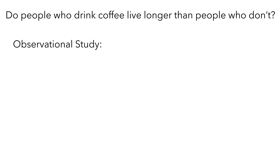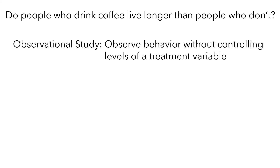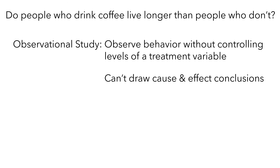We used an observational study to answer the first research question, which was, do people who drink coffee live longer than people who don't? In observational studies, we collect data by observing behavior without controlling the levels of a treatment variable. In our example, some participants chose to be coffee drinkers and others chose not to drink coffee, and then we observed and compared how long the two groups of people lived. By doing this, we avoided ethical issues and the need to collect data in a lab. But a significant issue was that we couldn't draw cause-and-effect conclusions. So now we've looked at an example of an experiment and an observational study — they allow us to address similar research questions, but they have different strengths and potential issues.